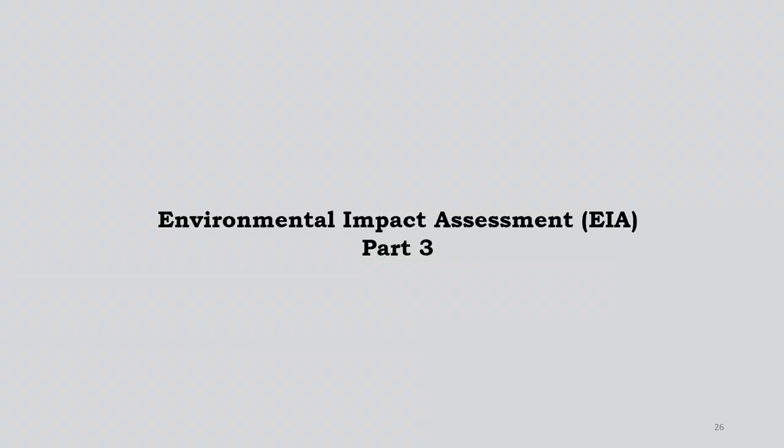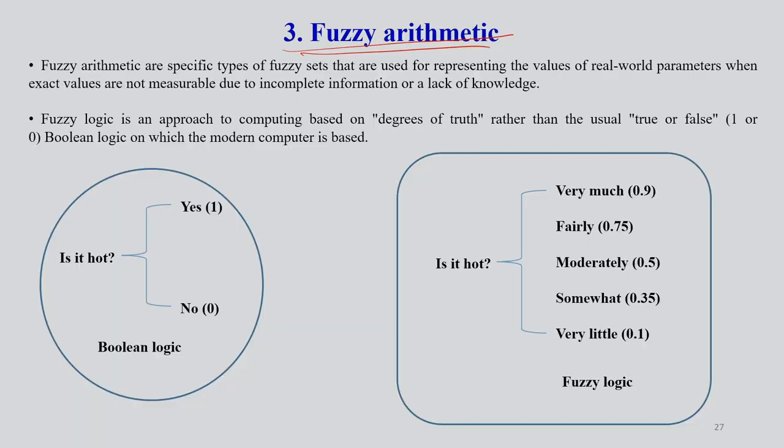In continuation, we will talk about the relation with environmental impact assessment. We have discussed EIA methods, LCA, and GMP - two methods in detail. Now we will discuss the third method known as fuzzy arithmetic method.